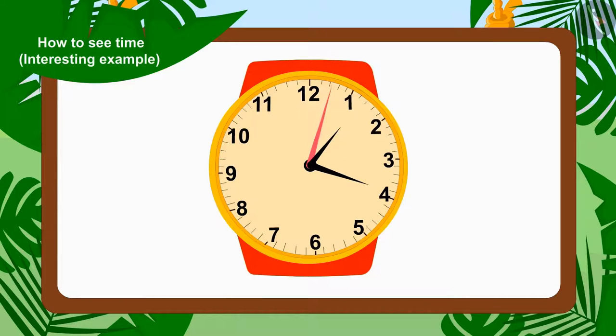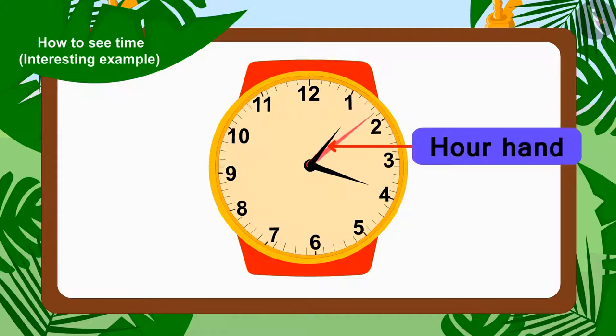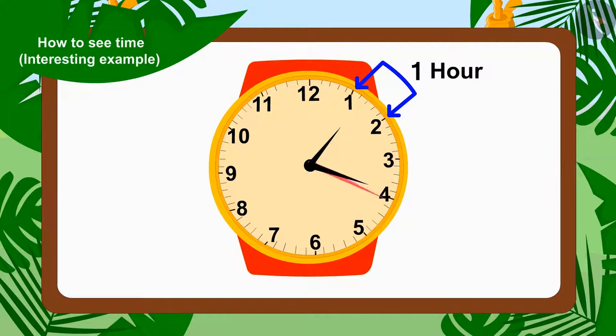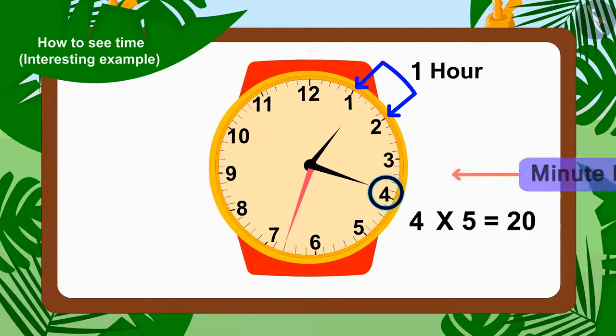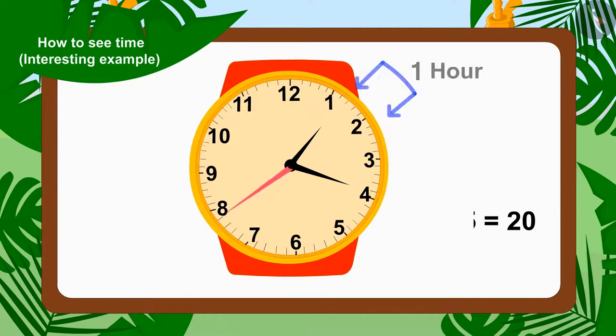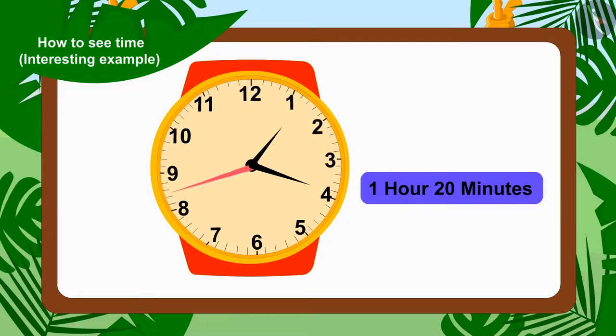Well done, children. You have found the right answer. In Chanda's watch, the hour needle is between 1 and 2, so it's 1 hour. And the minute needle is on number 4. So, how many minutes does that make? Yes, 4 times 5 or 20 minutes. In this way, the time in Chanda's watch is still 1 hour, 20 minutes.